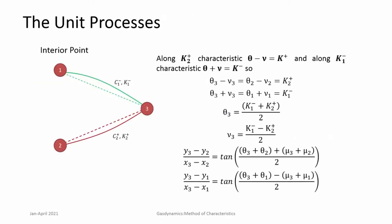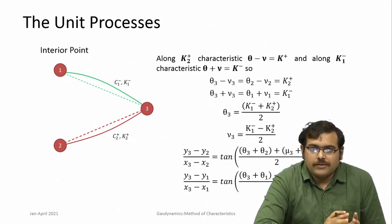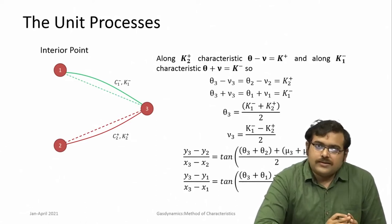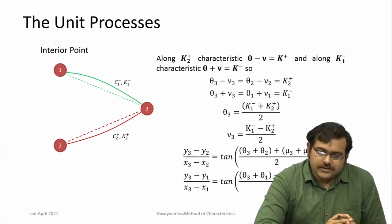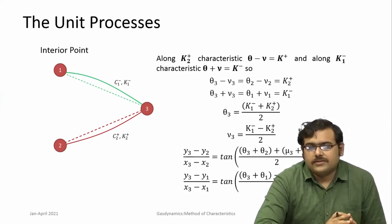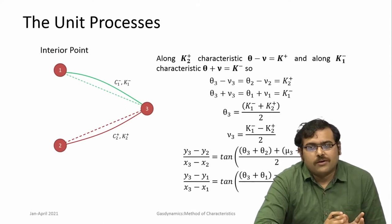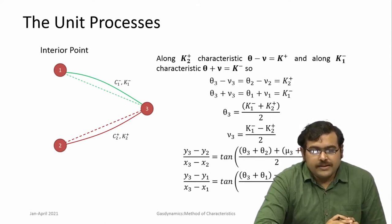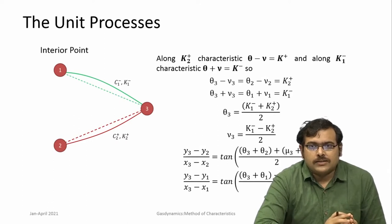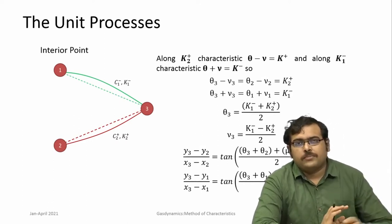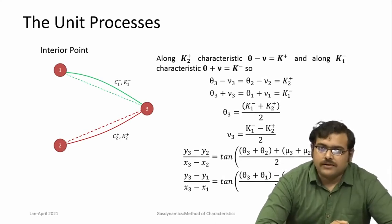You start from an initial line or initial condition. In order to do this, there are certain set of procedures that must be performed for certain points within the flow or at the boundaries. These are called the unit processes. If you consider an interior point — one well inside the flow where all its neighbors are also flow points inside the domain — then how do we solve for the Mach number and location of this particular point?